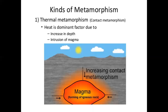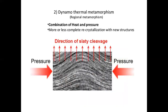Kinds of metamorphism. Thermal metamorphism: heat is the dominant factor. As we go down inside the earth, the temperature increases. It is also called contact metamorphism. Dynamothermal metamorphism: both heat and pressure are dominant. Rocks completely recrystallize with new structures. You can see in this figure that the direction of slaty cleavage has been changed due to pressure.